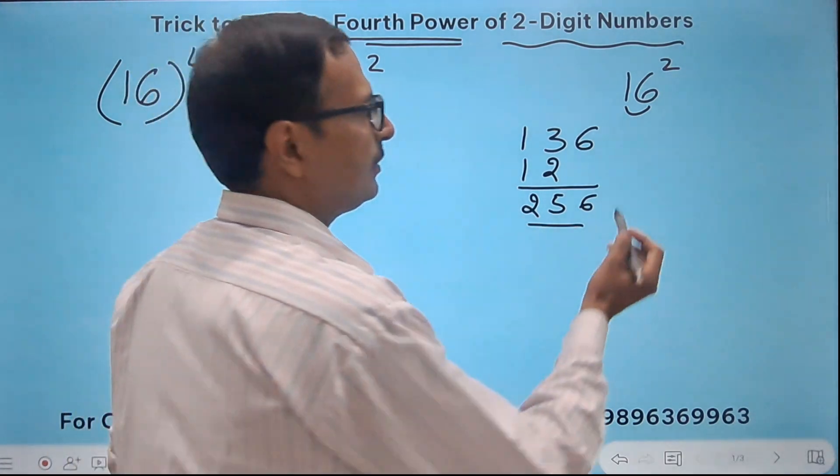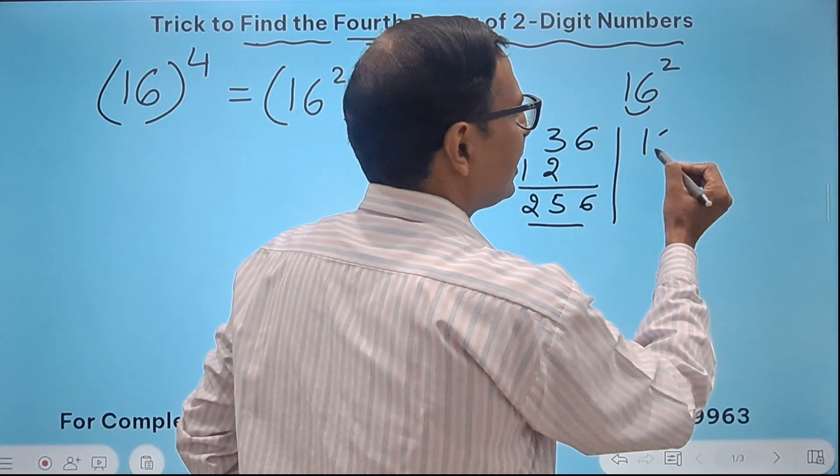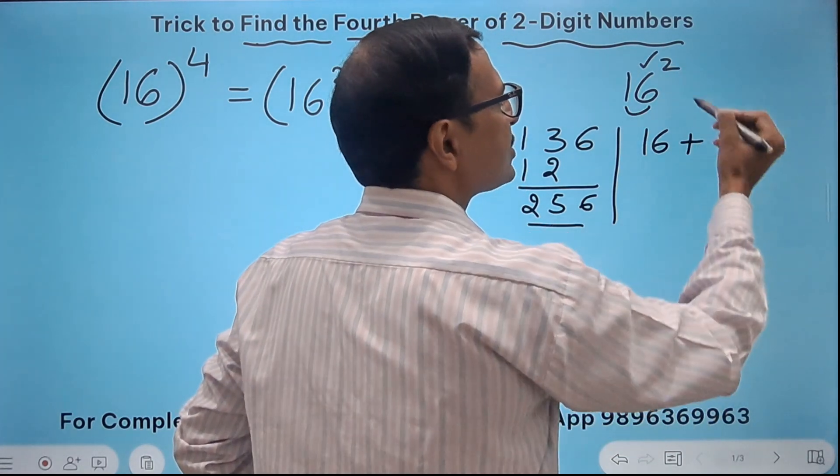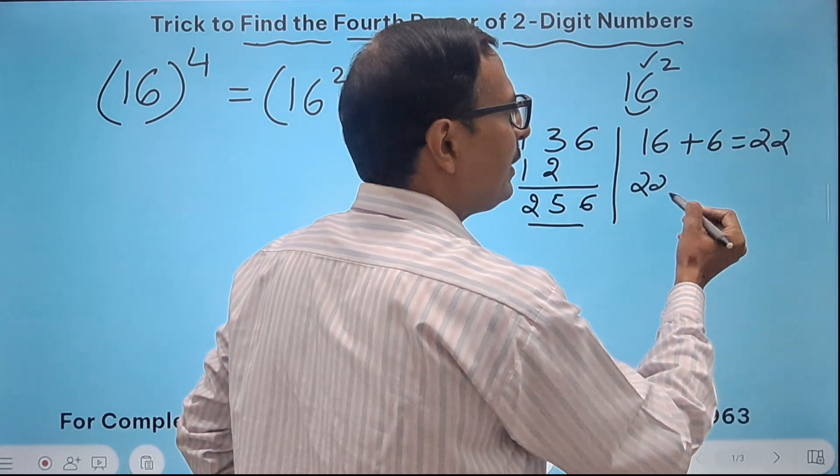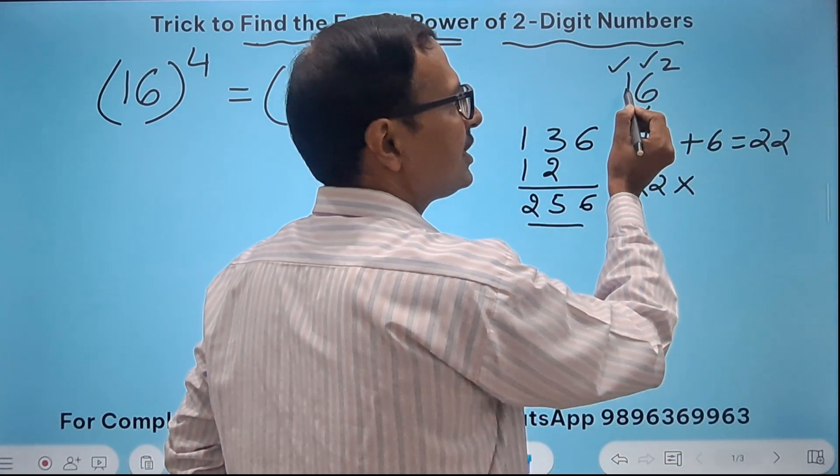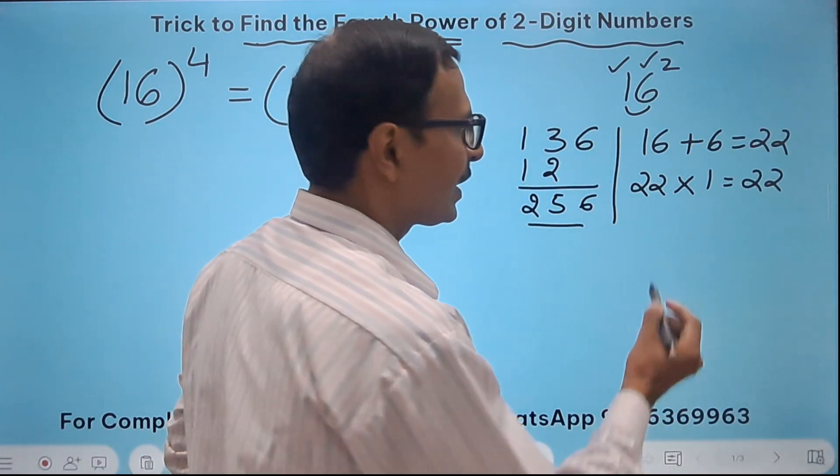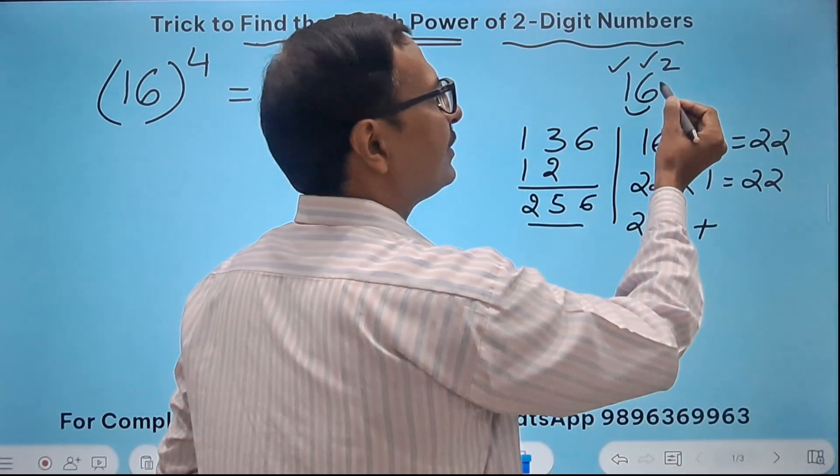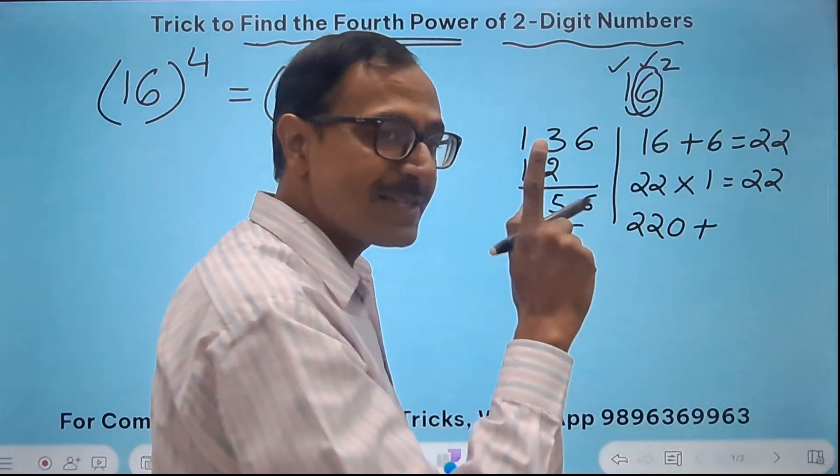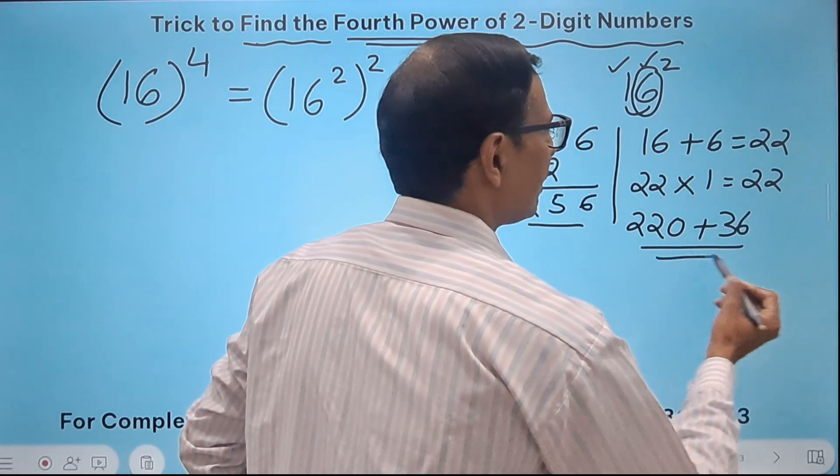The other method: First the number 16, I will add the unit digit 6 to this. So I get 22 and then 22 will be multiplied by the first digit here 1. So that is 22 only in this case. Just put a 0 with this 22 and add the unit digit square, 6 square. 6 square is 36 and you get the same answer 256.